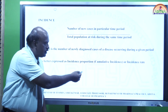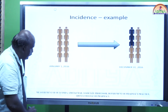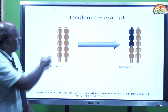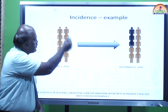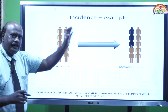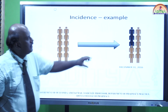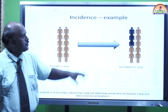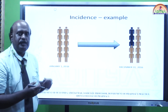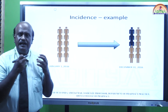Incidence can be expressed in two different ways: first is called incidence proportion, also called cumulative incidence, and the second is called incidence rate. For example, in a population of ten members — shown in brown as healthy — in January 2016, by December 31, 2016, three people are diseased (shown in black). So the incidence becomes 3 by 10 for that population.